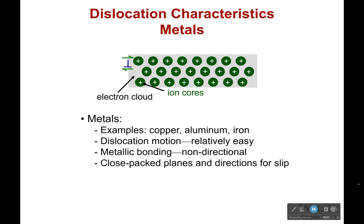Let's talk about the dislocation characteristics of metals, and I'll also talk about ceramics in just a moment. For metals, we have this cloud of electrons and all these ion cores are inside that cloud, packed as tightly as they can. Things like this would be copper, aluminum, or iron.